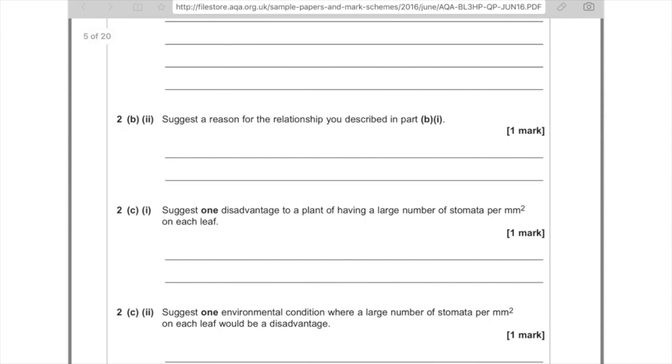So just a reason for the relationship you described in B part 1. Well, if there's more carbon dioxide, because remember the whole point of the stomata is to allow carbon dioxide into the leaf for photosynthesis and to allow water out. So obviously, if there's more carbon dioxide, then you don't need as many stomata to let it in. And if there's hardly any carbon dioxide, then you need lots of ways of getting that carbon dioxide into the leaf. So really, all you need to say here is that when there's more carbon dioxide, the plant doesn't need as many stomata.